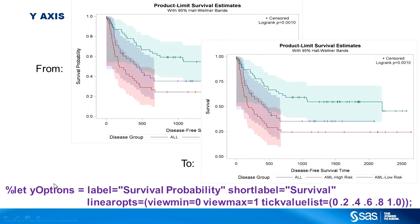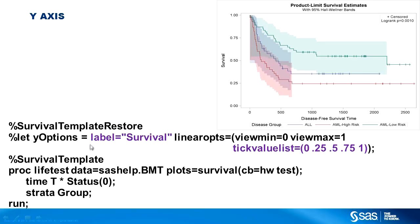Let's see another example. Here is the original y-axis: the label is 'survival probability' and the ticks go from 0 to 1 by 0.2. Here is the macro variable that provides that information — it provides the label, the tick value list, and other things. We can provide all the macros and macro variables, change just what we want: I'm going to change the label to 'survival' and change the tick value list to use an increment of 0.25. I compile the templates, run ProcLifeTest, and now I get a modified y-axis.